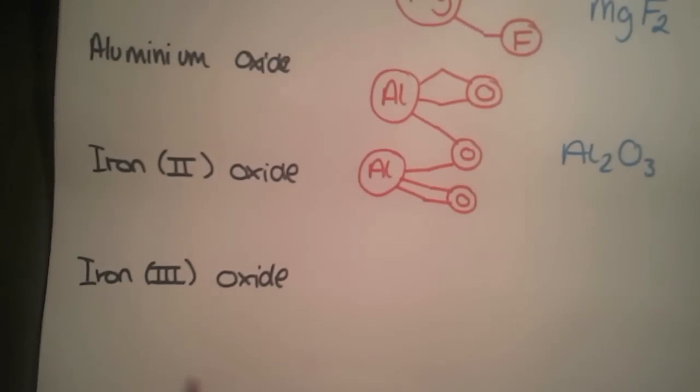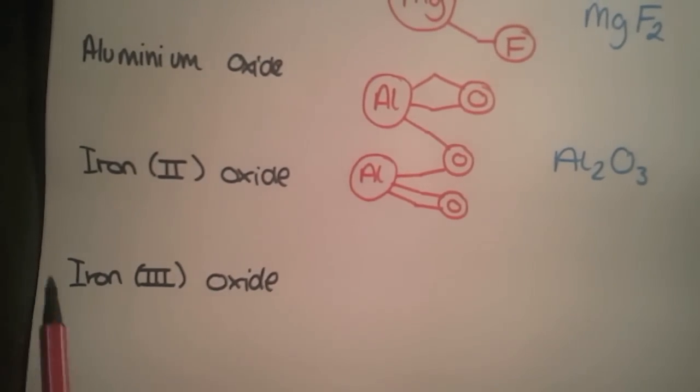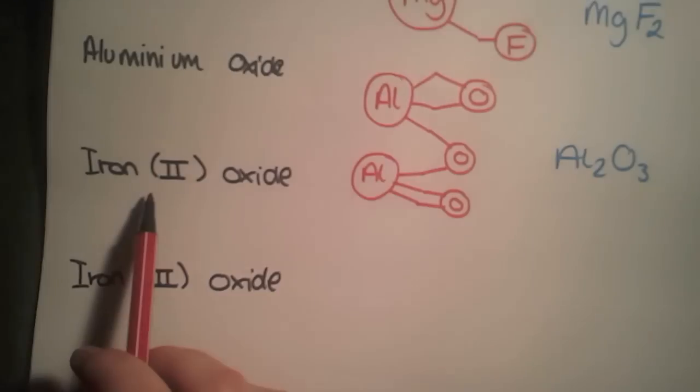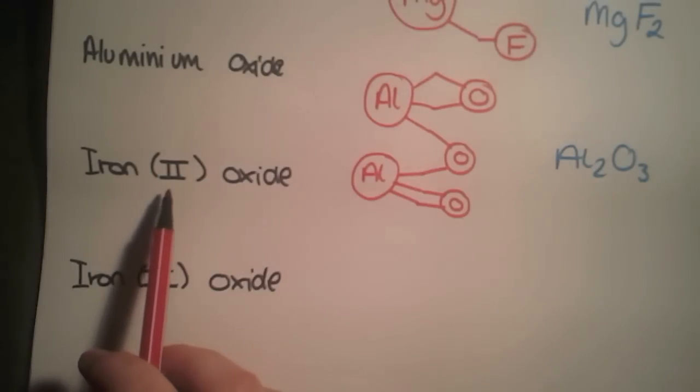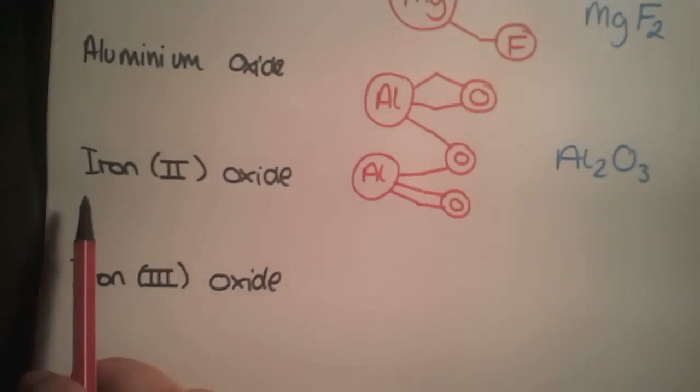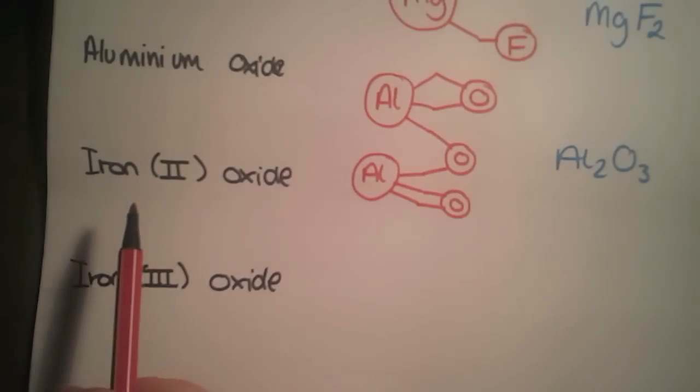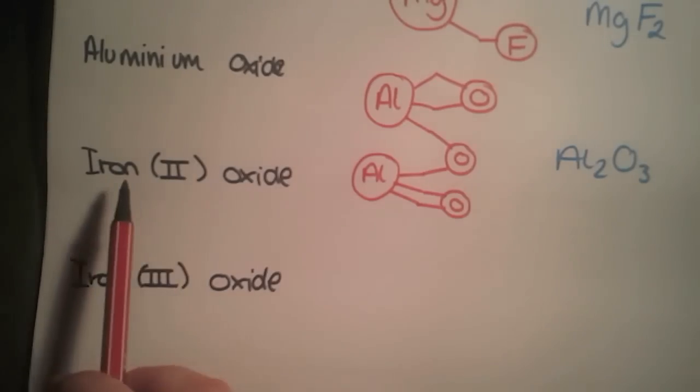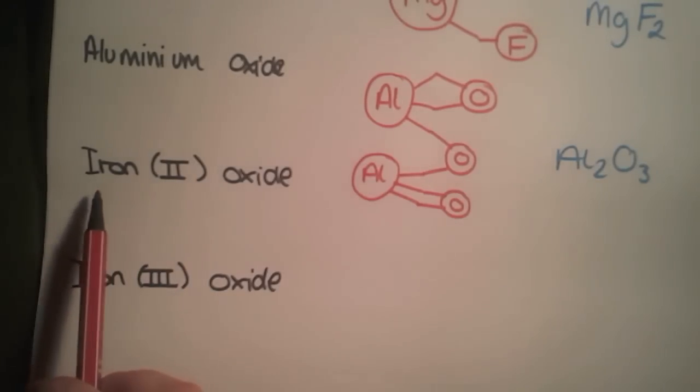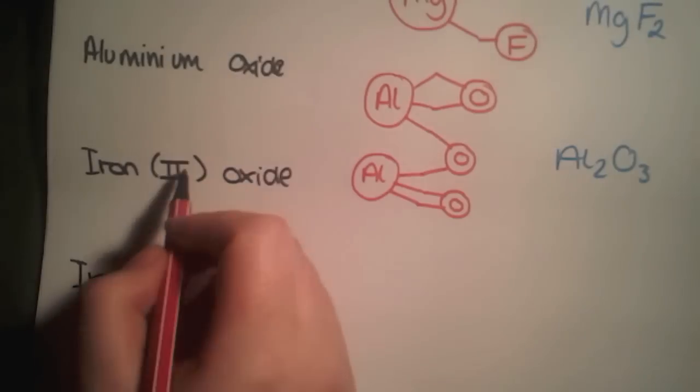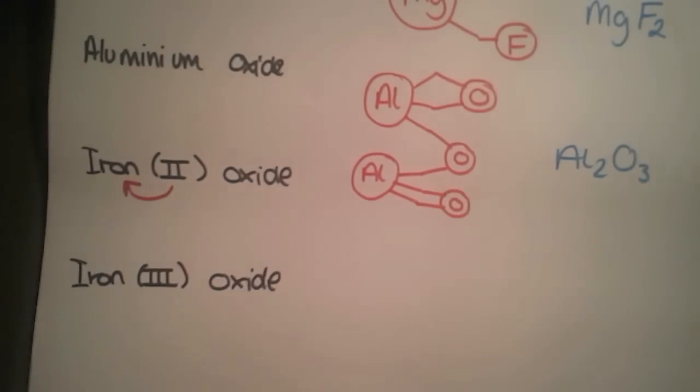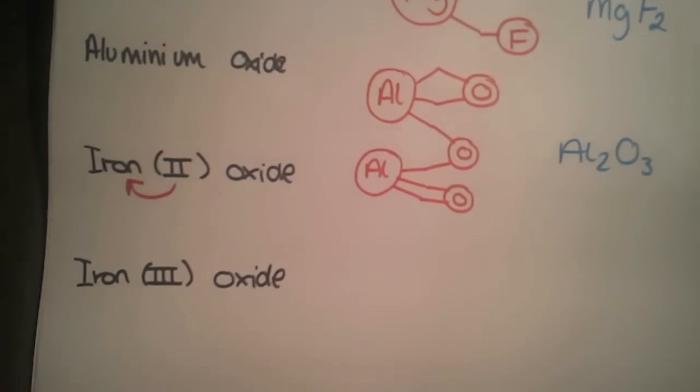This next example, you'll see the name looks slightly different. We have iron and then in brackets we have the Roman numeral for two, and then oxide. This is because iron is a transition metal and you can't work out its valency by which group it's in, as it can change. So we give you the valency in brackets as a Roman numeral after the name. So this two is the valency for the iron.